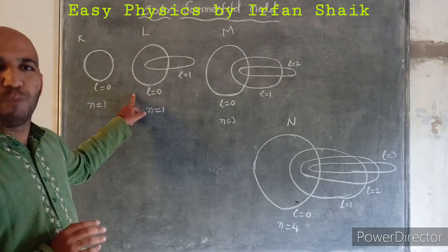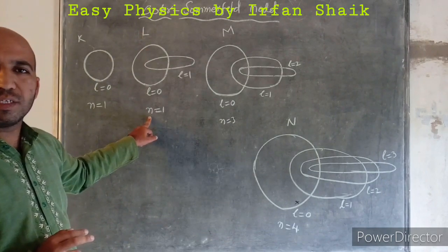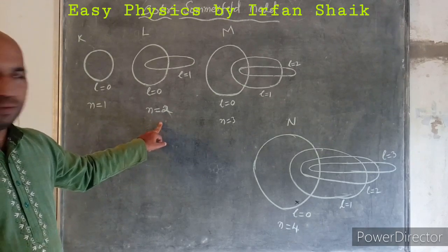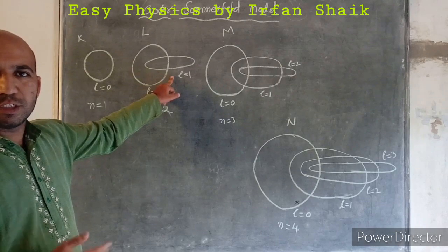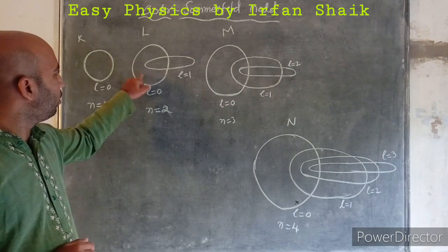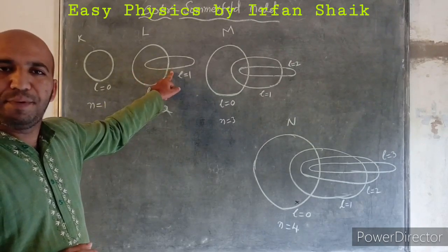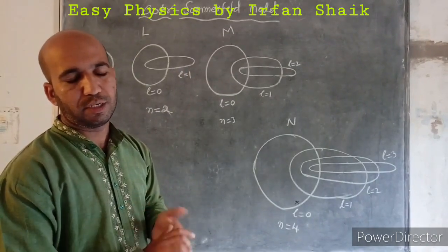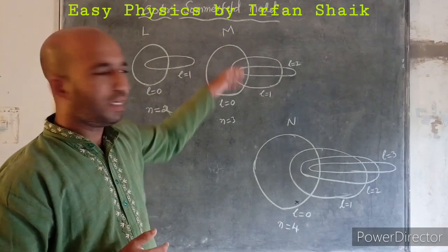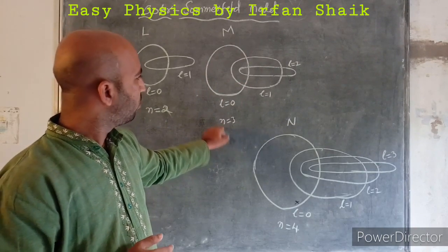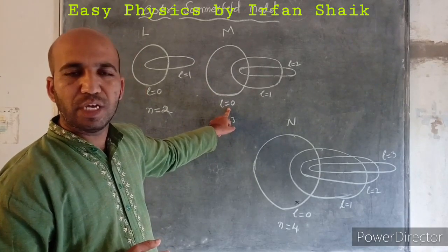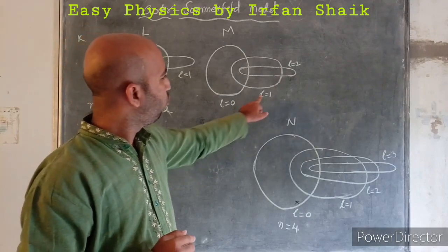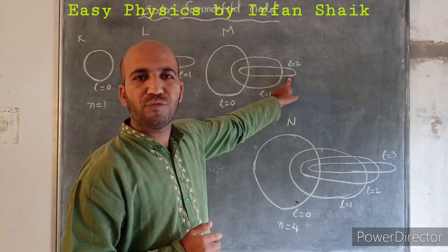For the second shell of Bohr — called the L shell, n=2 — Sommerfeld added one elliptical orbit. The original circular orbit has l=0, and the newly added elliptical orbit has l=1. For the third shell, the M shell (n=3), its original orbit has l=0, and Sommerfeld added two elliptical orbits with values l=1 and l=2.